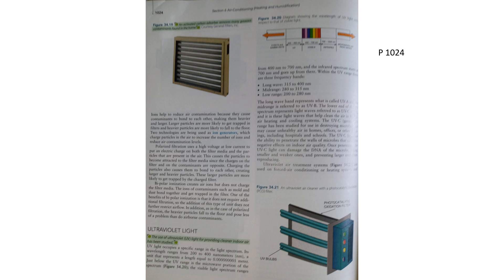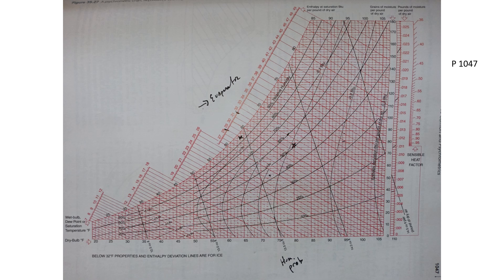On page 1024, ultraviolet light is the type of light used in a light filter. Most people working in the field already know this, but it's right there on that page. When you get that question, ultraviolet is the answer — page 1024.